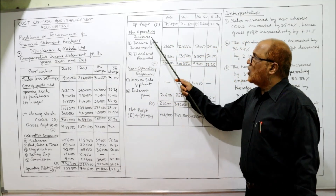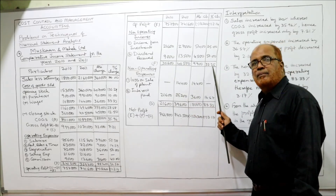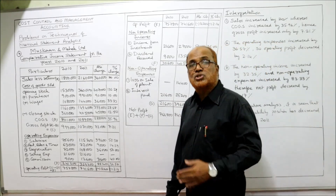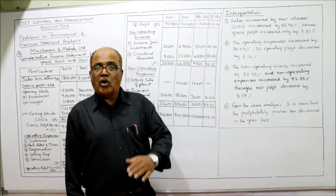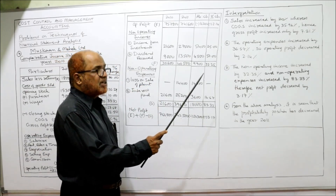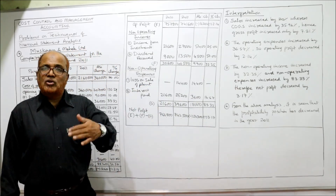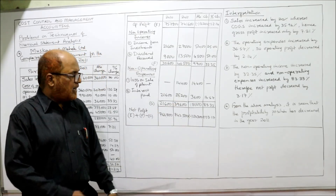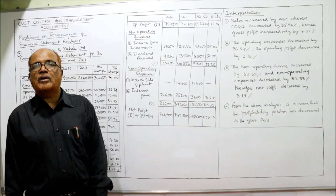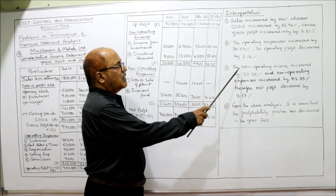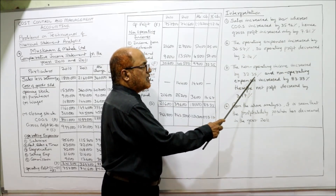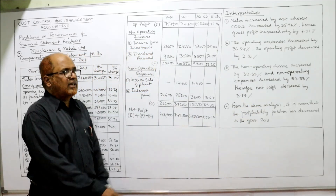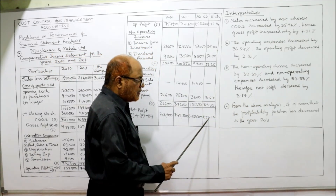Third interpretation: non-operating income increased by 32.35%, whereas non-operating expenses increased by 83.33%. Non-operating expenses grew far more than non-operating income. This is why net profit decreased by 3.17%. So non-operating income increased by 32.35% and non-operating expenses increased by 83.33%, therefore the net profit decreased by 3.17%.